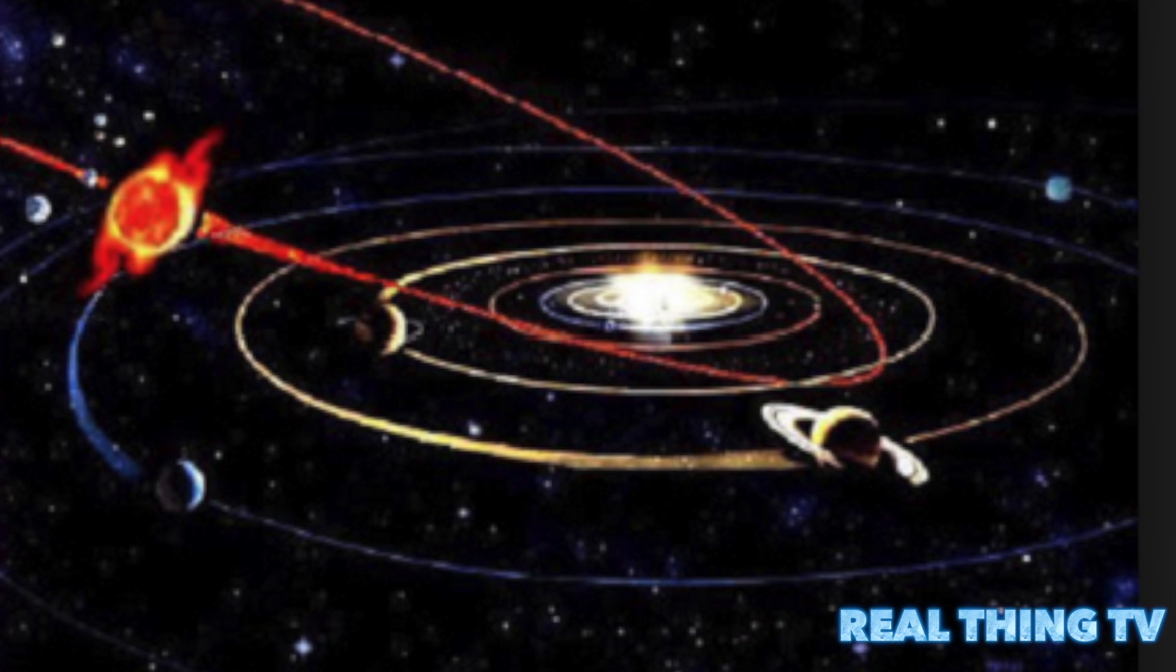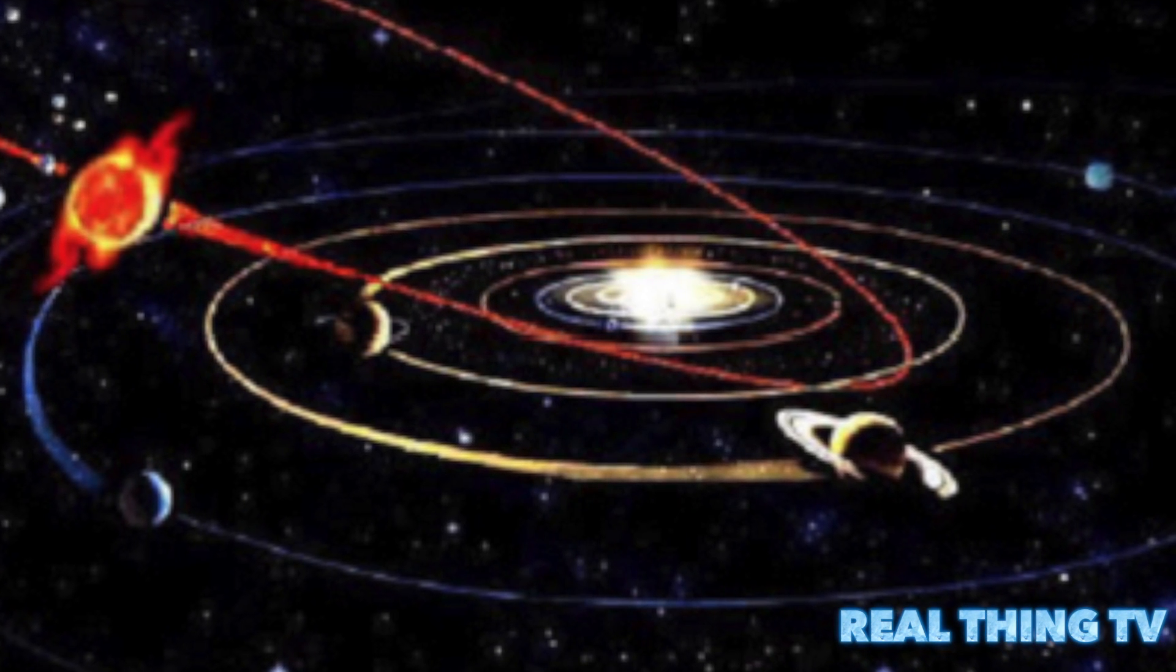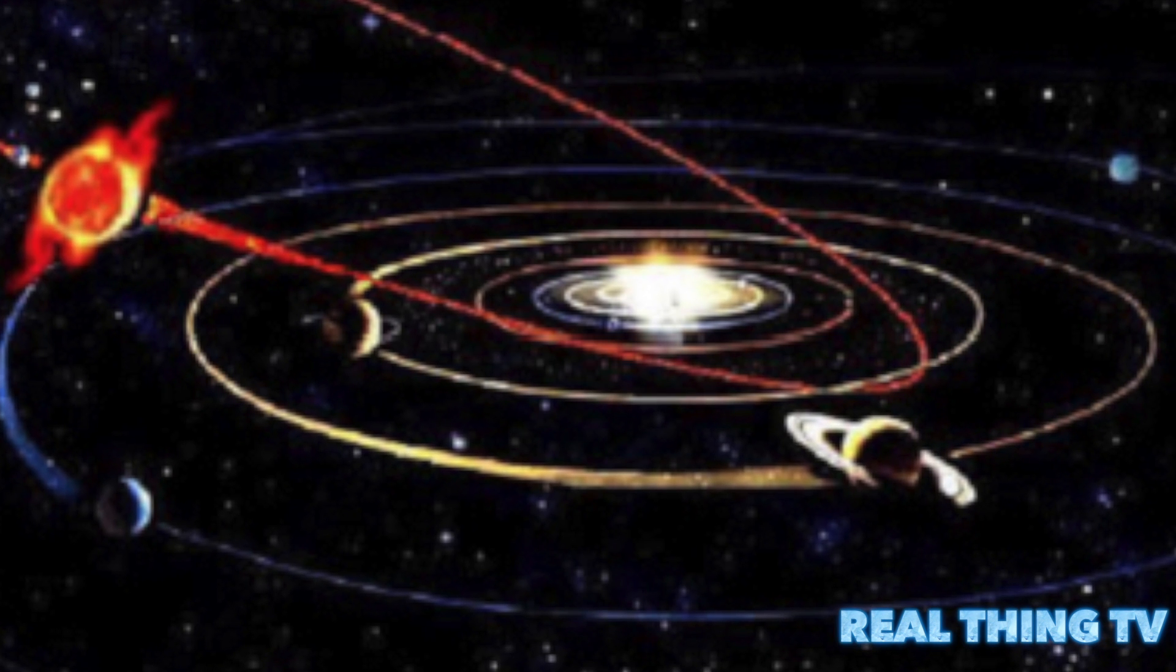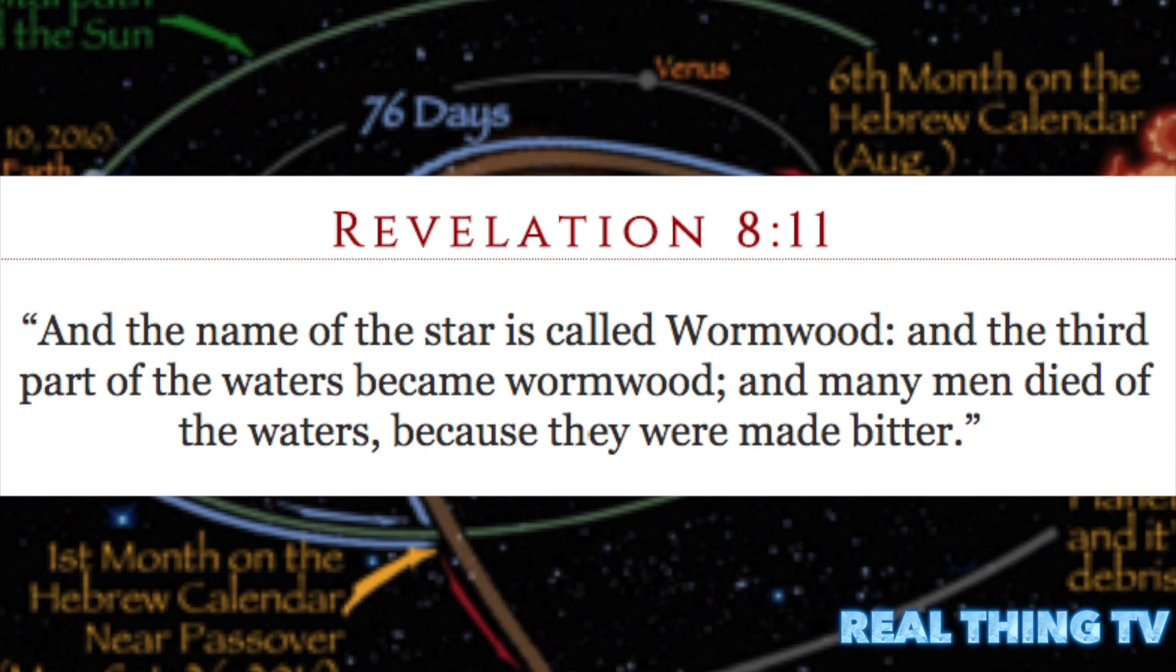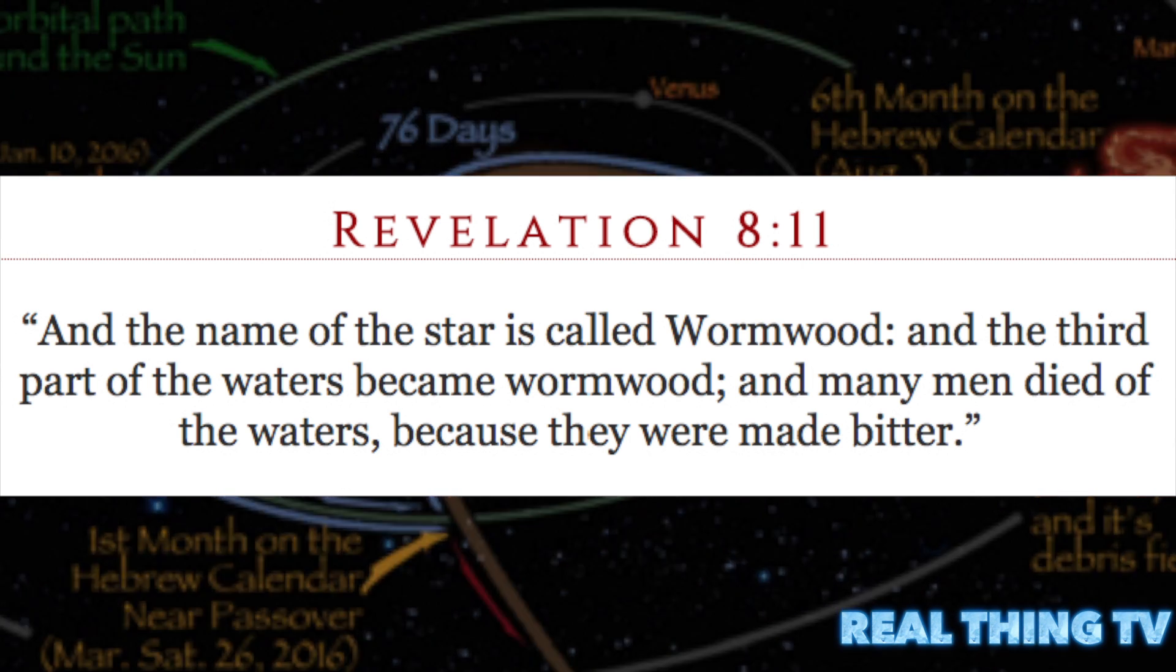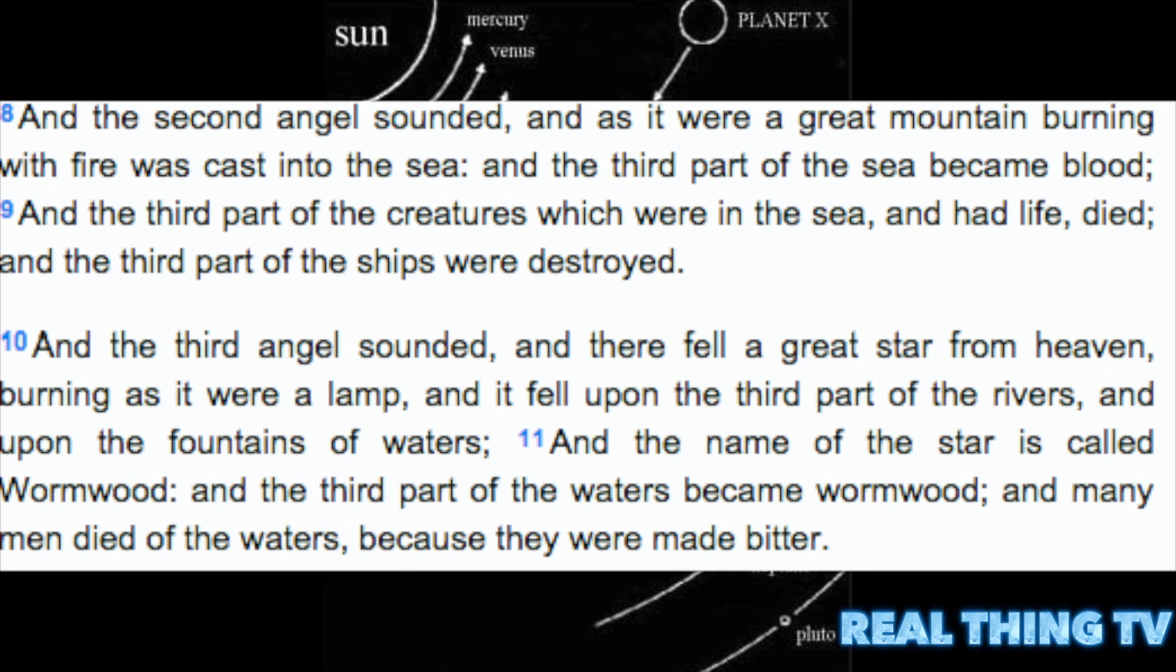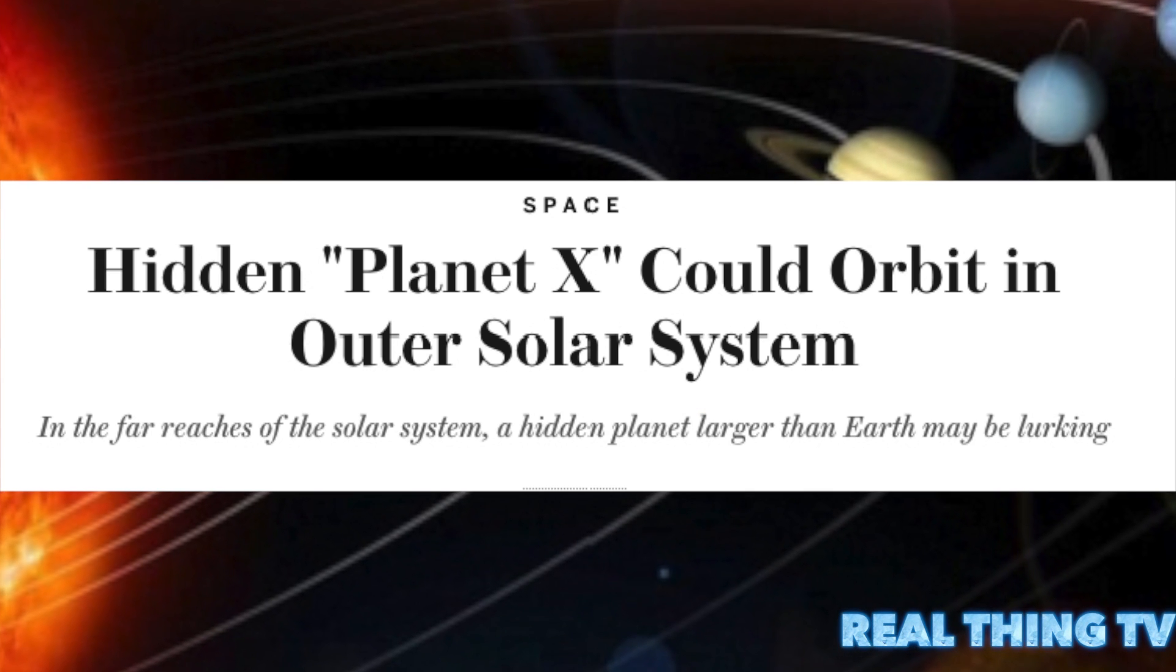Just think about this huge planet if it comes by the Earth. Imagine just the gravitation. Even if it misses the Earth, it would just cause huge waves and a whole bunch of disturbance and stuff. As far as the biblical term, I've been feeling that this Nibiru could be wormwood.